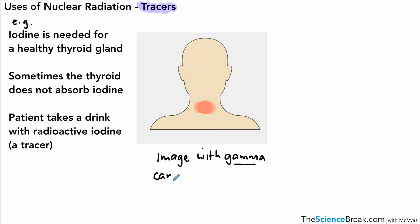We get an image with a gamma camera. In this case you can see there is gamma radiation being given off where the thyroid gland is, which means that the radioactive iodine has been absorbed by the thyroid gland, so this is not an issue with this patient.